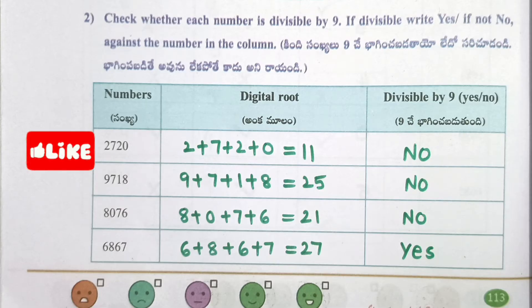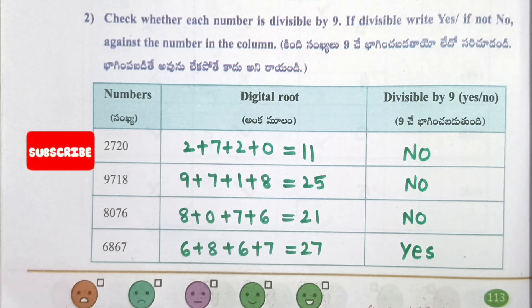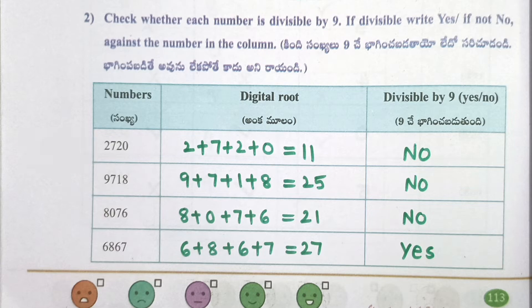2720 — digital root is 11, so not divisible by 9, no. 9718 — digital root is 25, not divisible by 9, no. 8076 — digital root is 21, not divisible by 9, no. 6868 — digital root is 27, yes, divisible by 9.